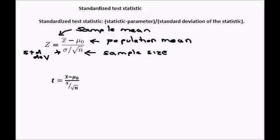The second formula you are likely to see for a standardized test statistic is the t score. It looks very similar to the z score. We have our x bar and our mu of 0, but this time instead of sigma, our standard deviation of the population, we have s which is the standard deviation of the sample.